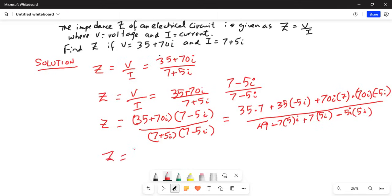Now Z becomes equal to 35 times 7 is 245. Next is minus 5 times 35 is 175i. Next is 7 times 70 is 490i. And then we have plus times minus which is a minus, so 70 times 5 is 350i squared.